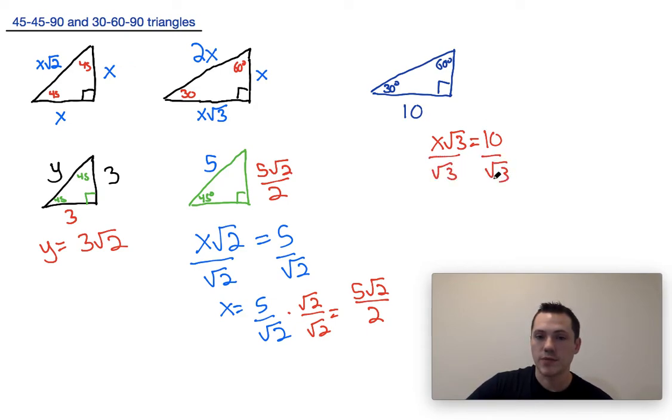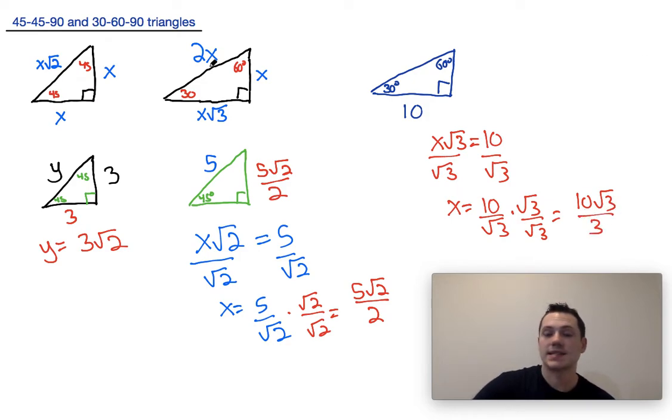Dividing both sides by root 3, we would find x is equal to 10 over root 3, which can be rationalized by multiplying by root 3 over root 3. And we find x is equal to 10 root 3 over 3. Now x in the 30-60-90 triangle case represents the side opposite the 30 degree angle. So this side over here would be equal to 10 root 3 over 3.